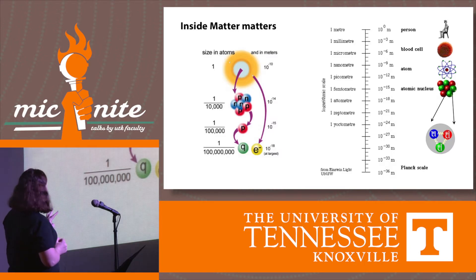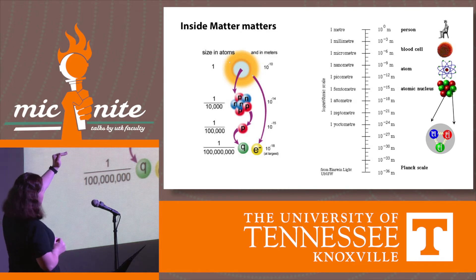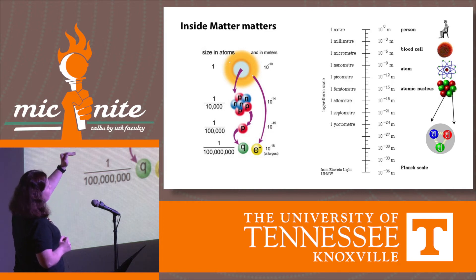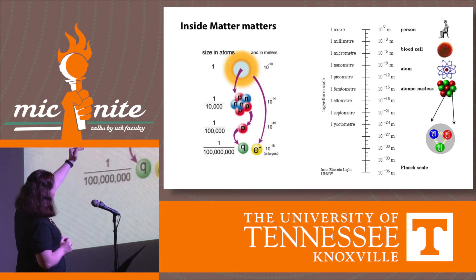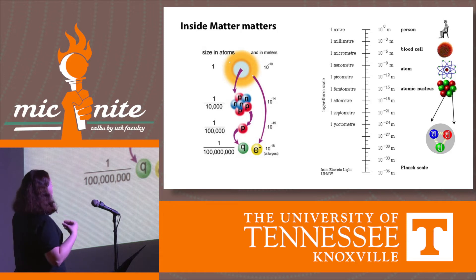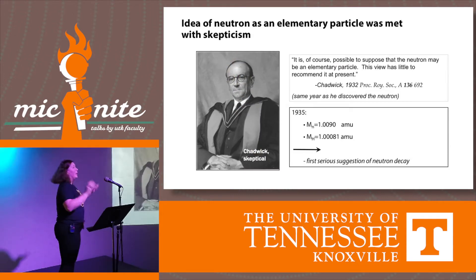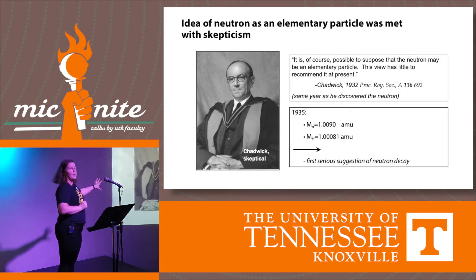We're going to talk about what role neutrons play. This is a log scale, so every tick means the scale is divided by 10 — so 10, 1, 0.1, 0.01. Compared to a person, you have to divide by 10 fifteen times to get to the size of a neutron. The unit for that size is called the femtometer.